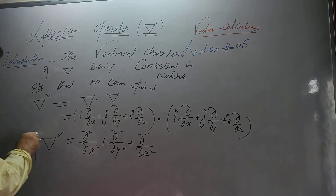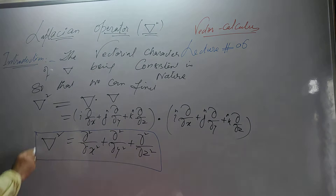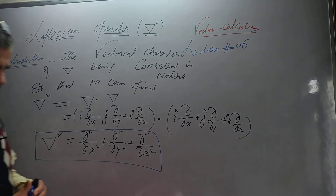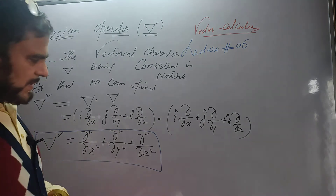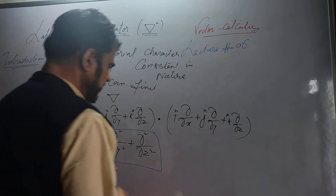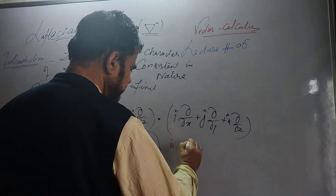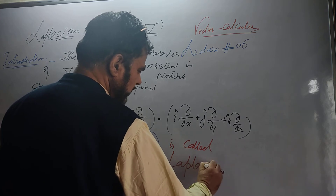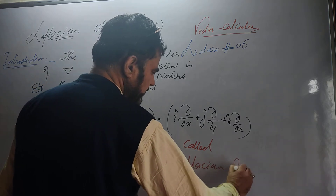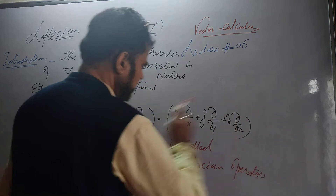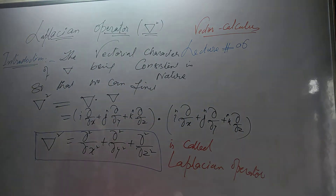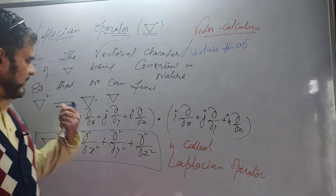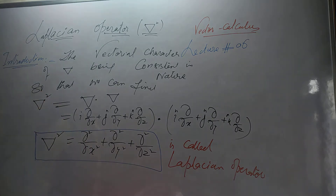This operator — delta squared or delta two — is now called the Laplacian operator. We operated the dot product of del with itself, which gives delta squared, and this expression is called the Laplacian operator.